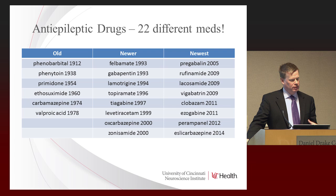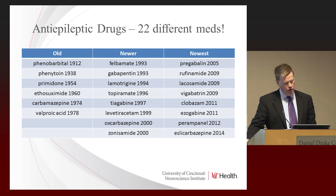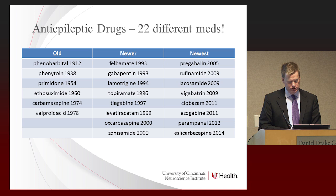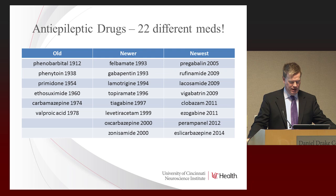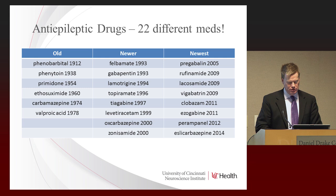I've divided these medicines into old, newer, and newest. From the late 70s until the early 1990s, we had no new seizure medicines available. Starting in the mid-1990s, we had a lot become available, then none for a few years, and then a whole host in the past 10 years as well. Again, it's great to have so many options, but it also adds a challenge about deciding how to best treat an individual. Some medicines are indicated for certain seizure types and not others, while other medications work well for many different seizure types.